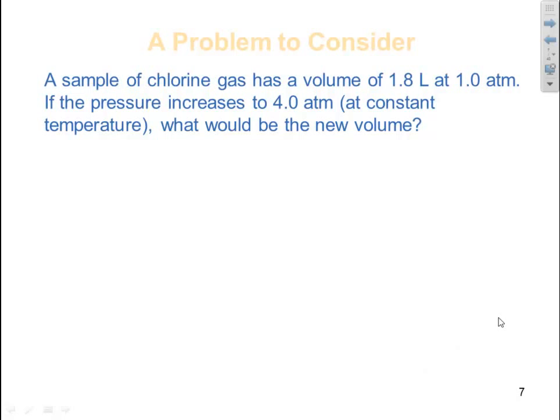A sample of chlorine gas has a volume of 1.8 liters at 1.0 atmosphere. If the pressure increases to 4.0 atm at constant temperature, what would be the new volume?